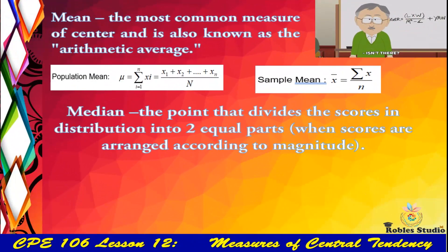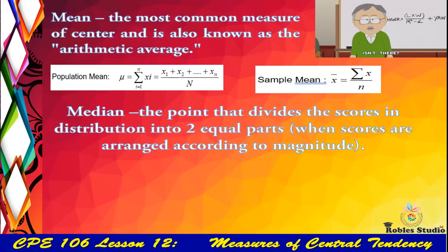Median is the point that divides the scores in the distribution into two equal parts, where the scores are arranged according to magnitude.